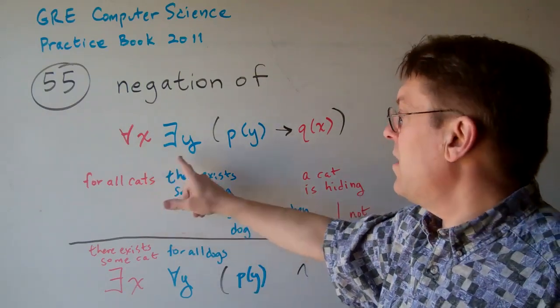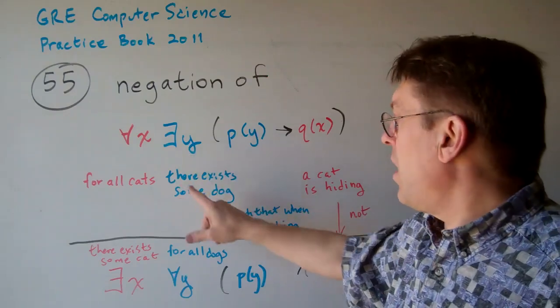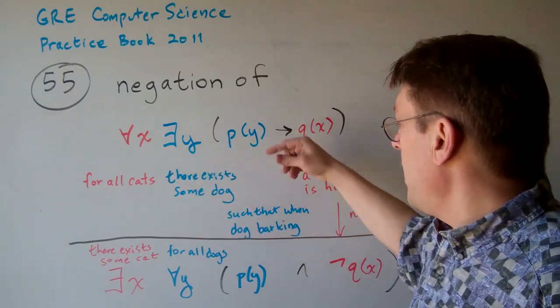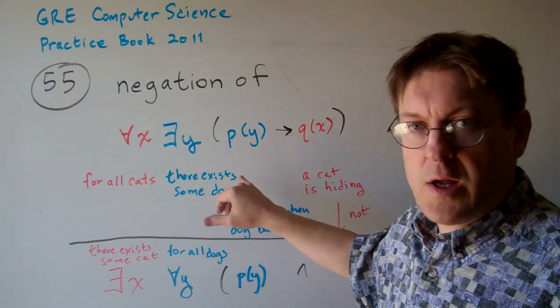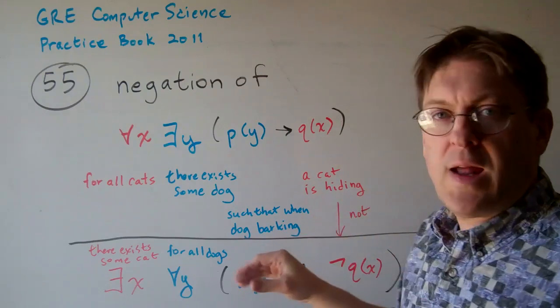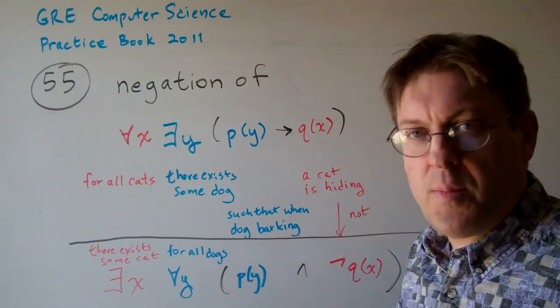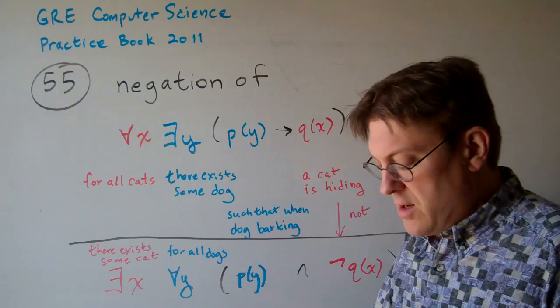Think of x as cats and y as dogs and p of y as a dog barking and q of x as a cat hiding. You can use anything you want, but this is what I'm going to use for this demonstration here.